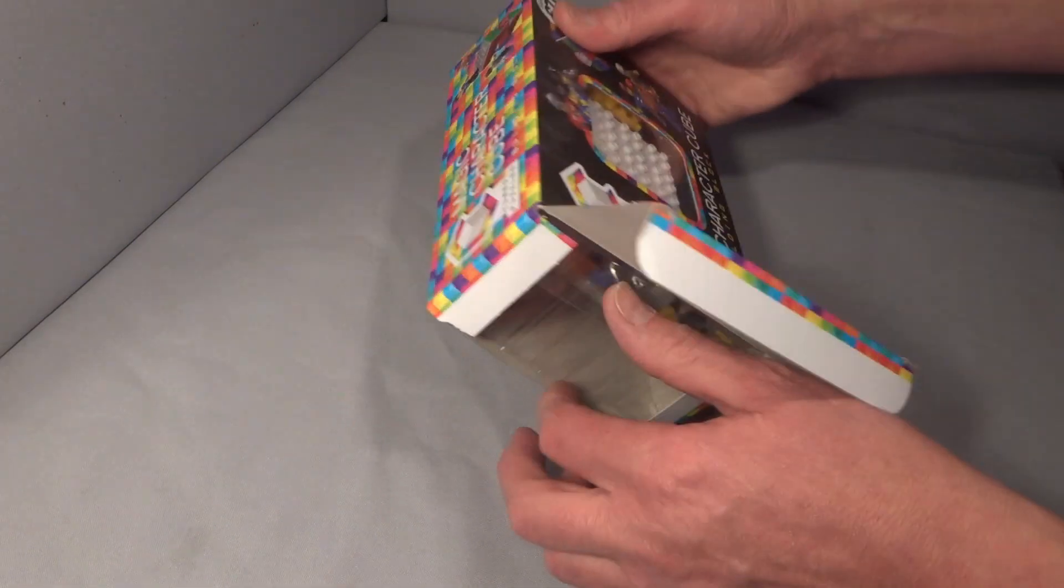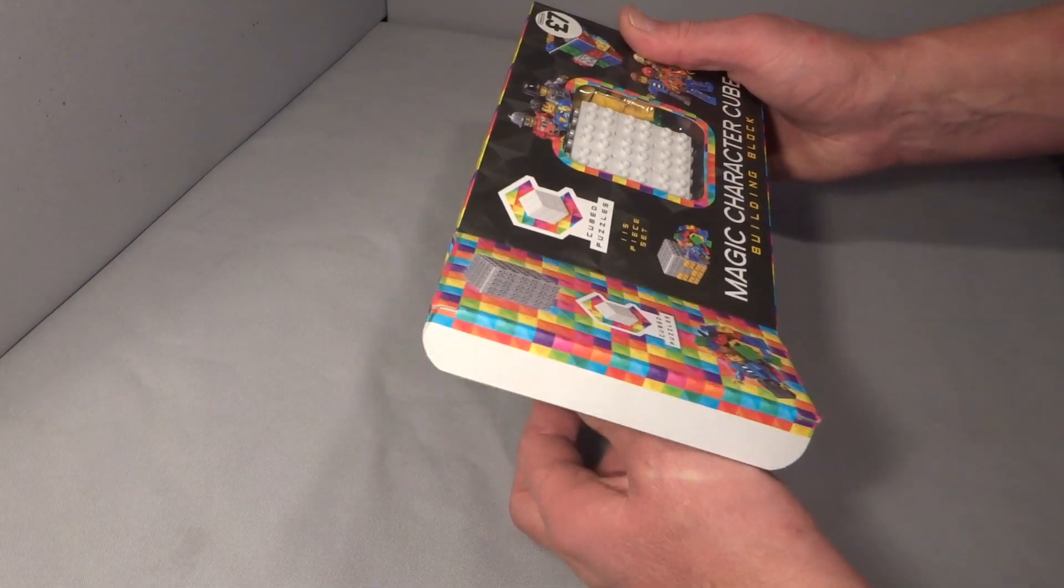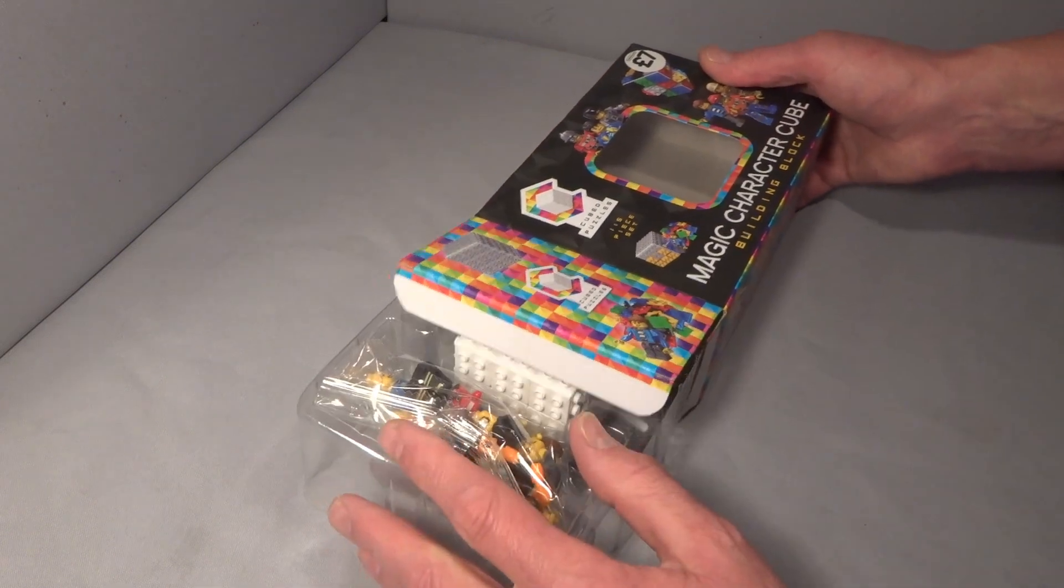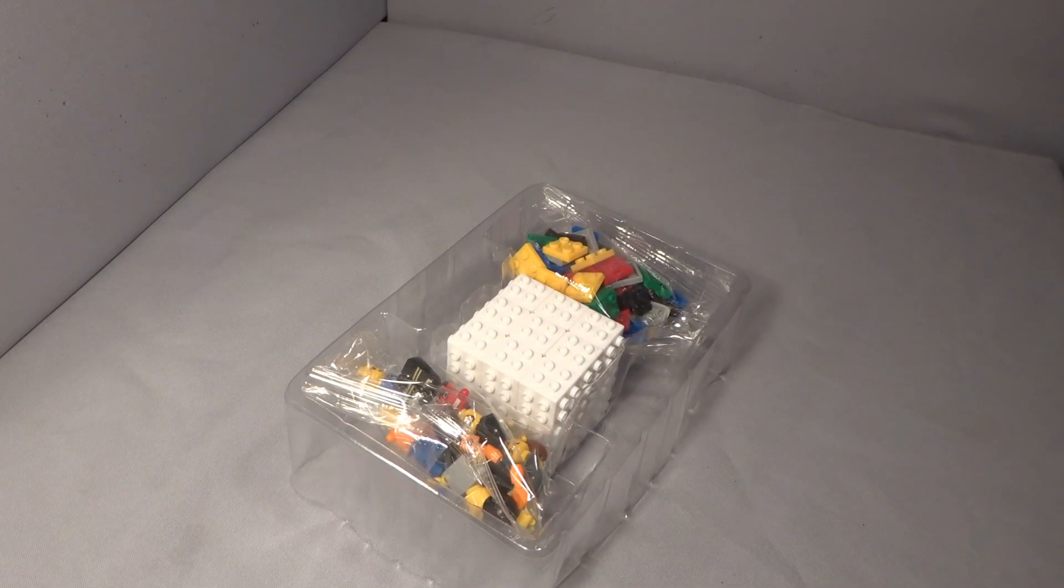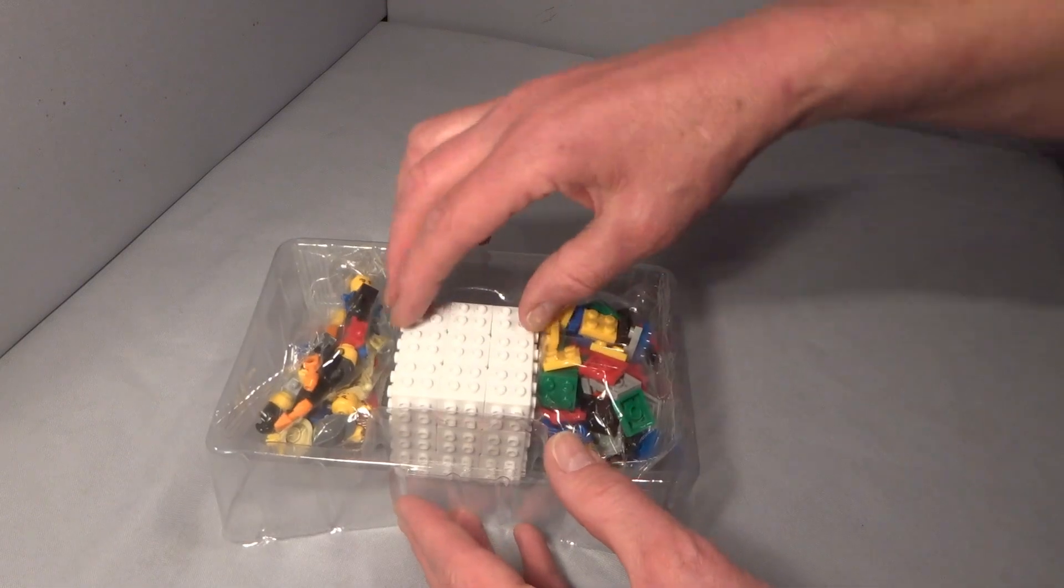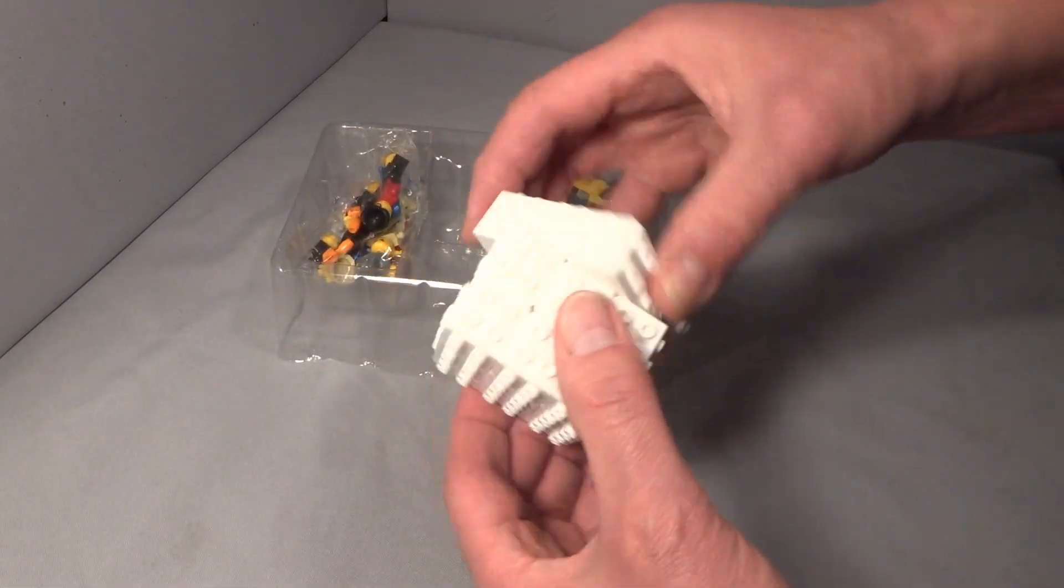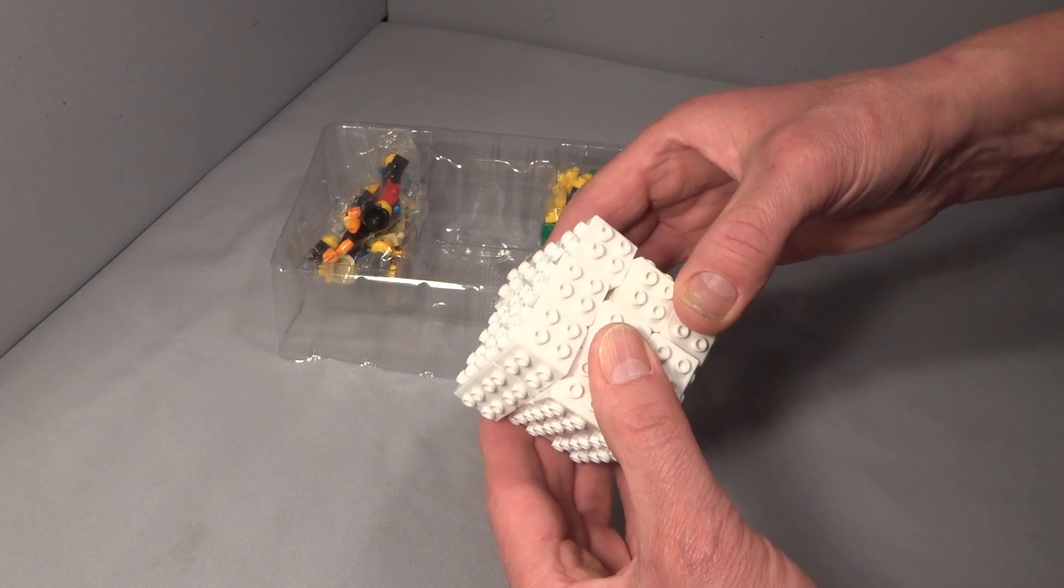I've seen similar cubes, but not this precise product. The package contains one Rubik's Cube, 54 tiles which resemble Lego, which you need to put on the cube, and parts for six character pieces, which also need assembling.